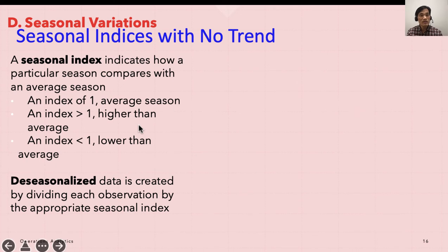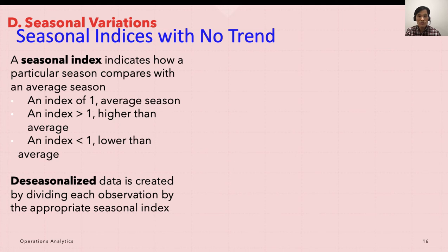Now let's take a look at seasonal variations. We looked at variations with the trend line before; now we are taking seasonality into consideration. Sometimes recurring variations make a seasonal adjustment in the trend line forecast necessary. Demand for coal and fuel oil, for example, usually peaks during cold winter months. Demand for golf clubs or suntan lotion may be highest in summer. Analyzing data in monthly or quarterly terms usually makes it easy to spot seasonal patterns. A seasonal index is often used in multiplicative time series forecasting models to make an adjustment in the forecast.